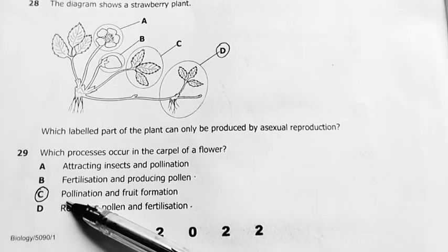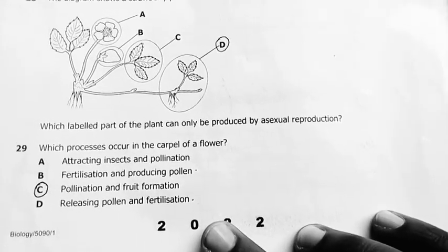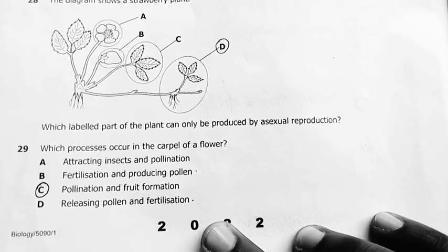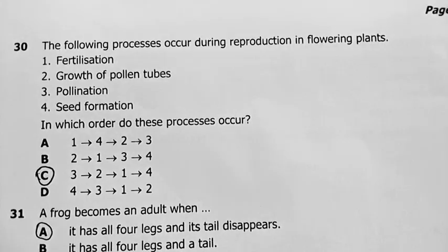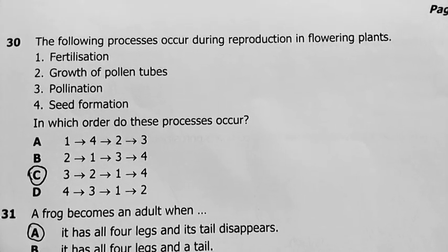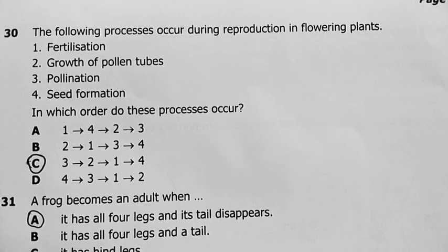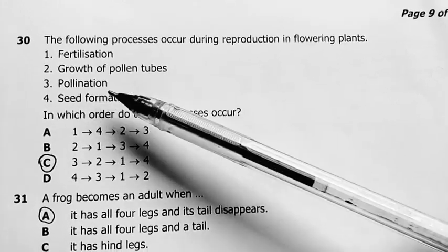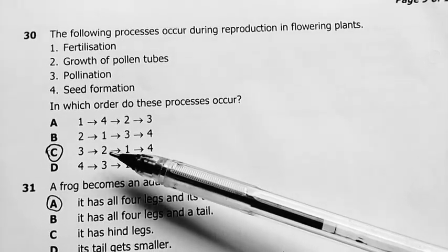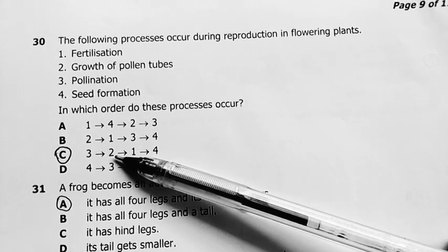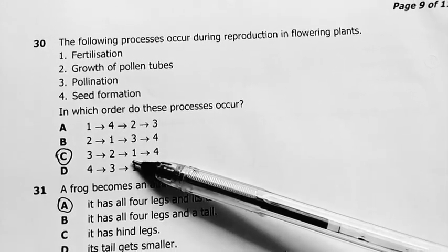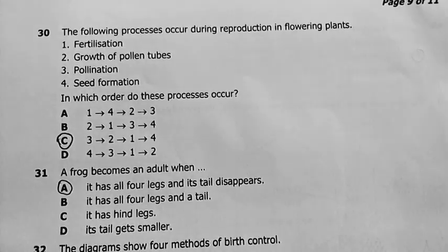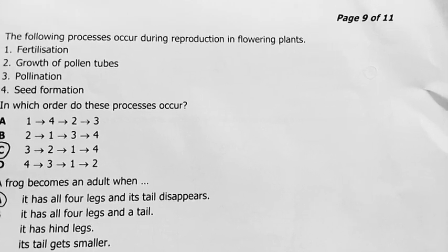Pollination and fruit formation. Question 30: the following processes occur during reproduction in flowering plants — which order do they occur? Fertilization, growth of pollen tube, pollination, seed formation. My answer was C: first pollination, then growth of pollen tube, then fertilization, then seed formation. Rearrange these to give the correct order in which reproduction takes place in flowering plants. The answer is C.